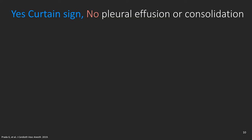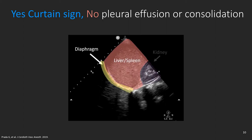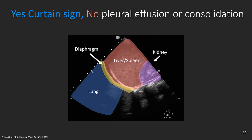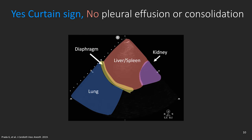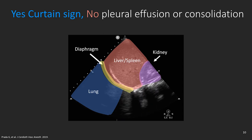When you scan over zone 2 — at the level of the diaphragm between the mid and posterior axillary line — in healthy patients, you should see the curtain sign, but not pleural effusion or consolidations. Before inspiration or during shallow breaths, you can identify the diaphragm, the spleen or liver, the kidney, and the shadow representing the healthy lung. To see the curtain sign, you ask the patient to take a deep breath, and as the lung inflates and expands, it covers the diaphragm, liver, spleen, and kidney like a curtain. The presence of the curtain sign indicates the absence of pleural effusion or consolidation at the base of the lung.